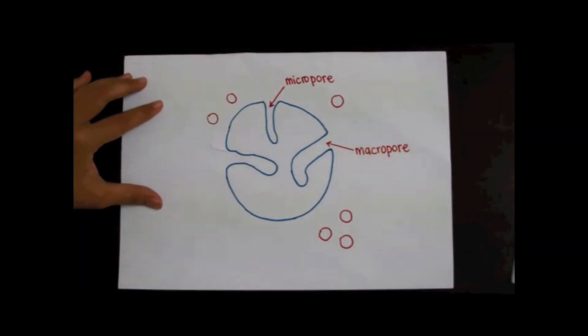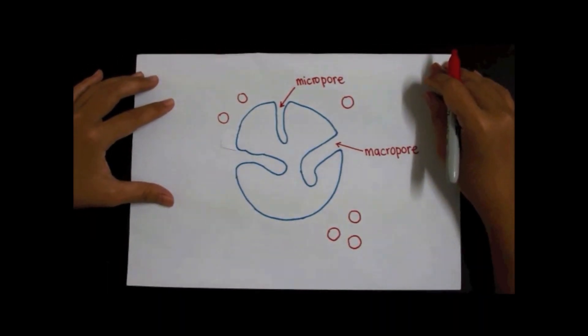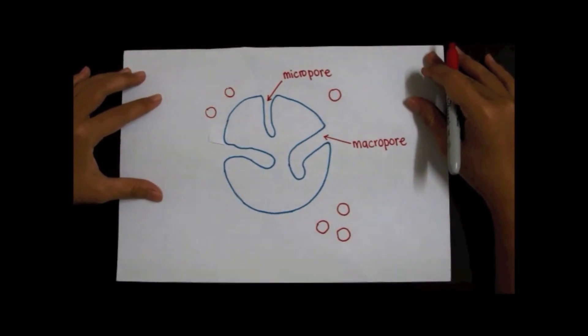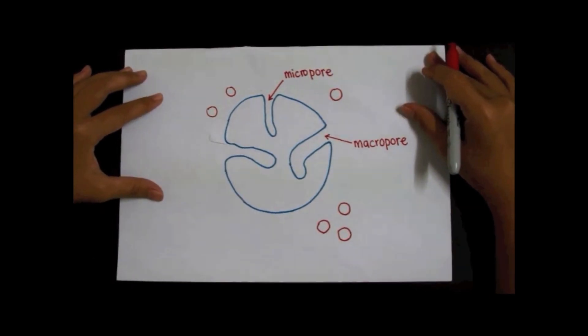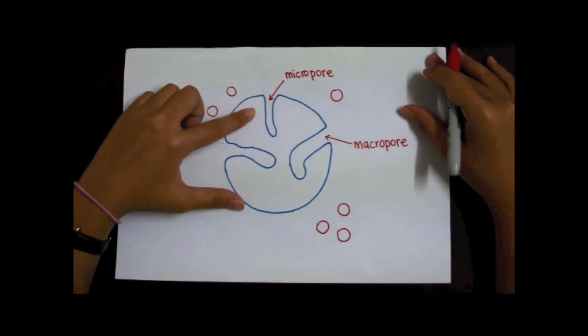We look at the structure of the activated charcoal which was used as the adsorbent. The atoms on the surface of the adsorbent are not wholly surrounded by other adsorbent atoms. These empty spaces are called pores. The larger size pores are known as macropores and the smallest ones are called micropores.